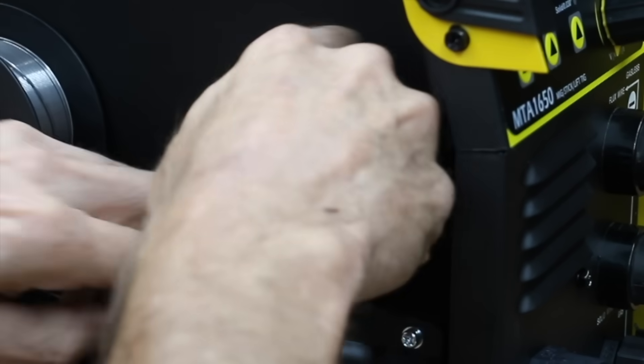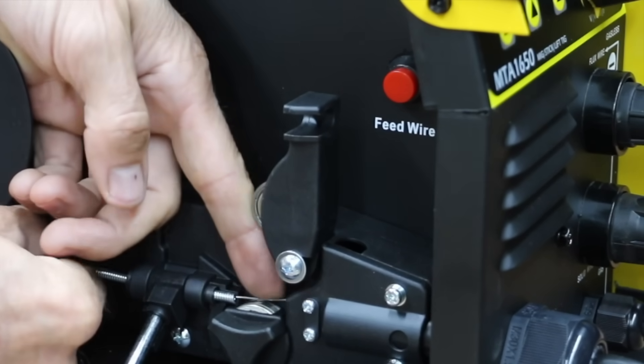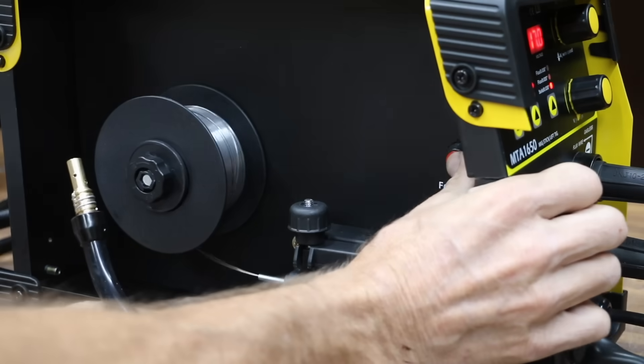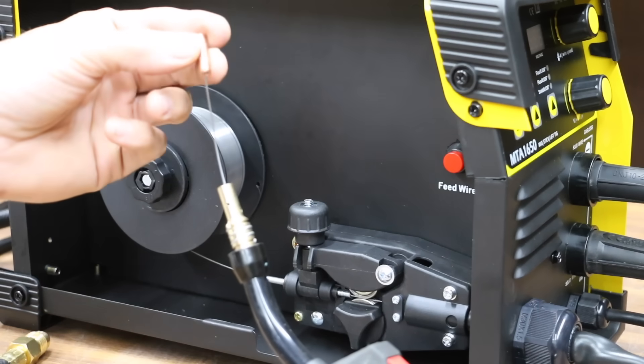The feed tester slides down and out of the way, allowing the idle arm to lift. With this welder, it is sort of difficult to feed the wire into the gun cable end. The feed tester is back in place and this welder has a button specifically designed for feeding wire into the cable. The contact tip has already been removed. I'll go ahead and install the contact tip and nozzle.